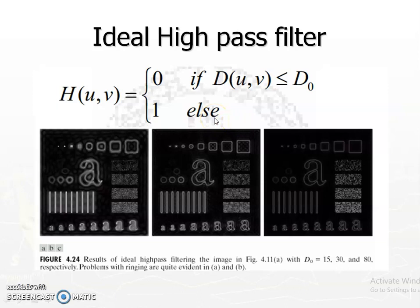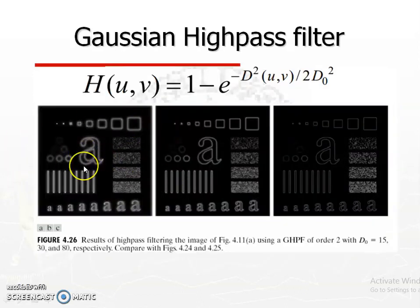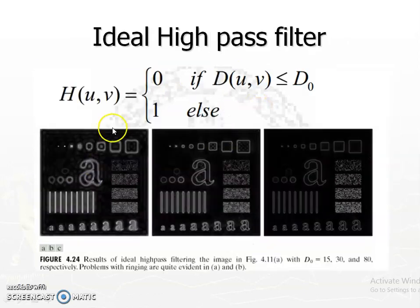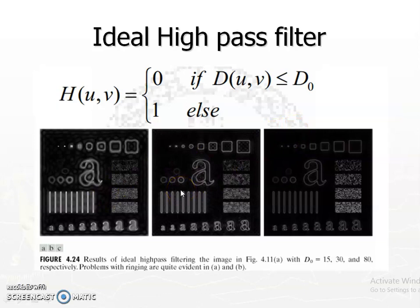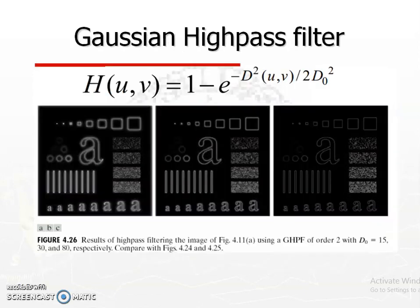The ideal high-pass filter results still show a ringing effect because of the sharp cutoff frequency. With different cutoff frequencies, as the cutoff frequency increases, more and more low frequencies are removed, resulting in more sharpening of edges. The Gaussian high-pass filter shows no ringing effect, and as the cutoff frequency increases, more sharpening occurs. The Butterworth high-pass filter behaves similarly.